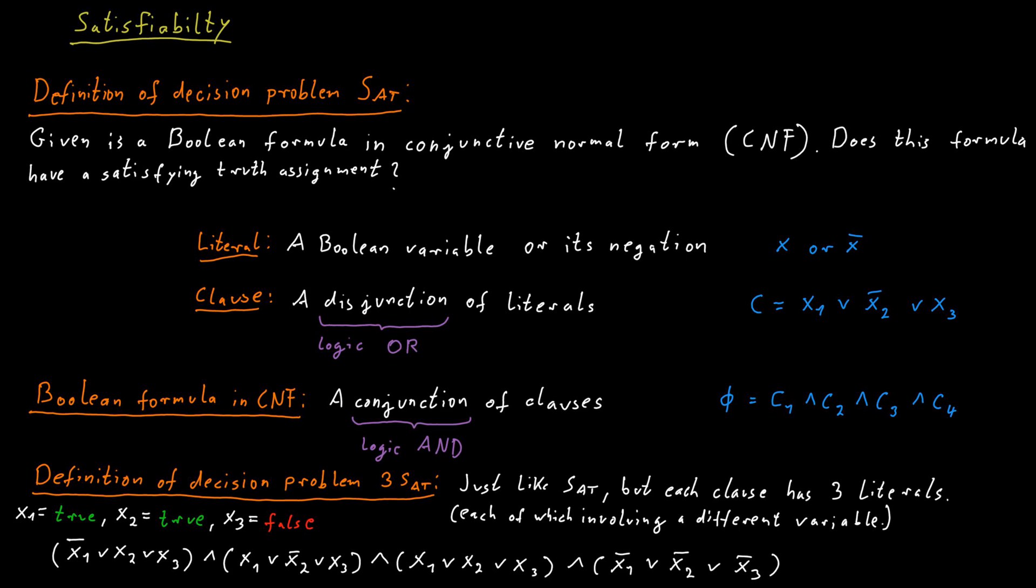Now if you plug these values into the formula, we see that the first clause is satisfied because x2 is true and x2 appears in that clause. The second clause is satisfied because x1 is true and x1 appears in this clause. The third clause is satisfied because both x1 and x2 appear in the clause and both of those variables are true.